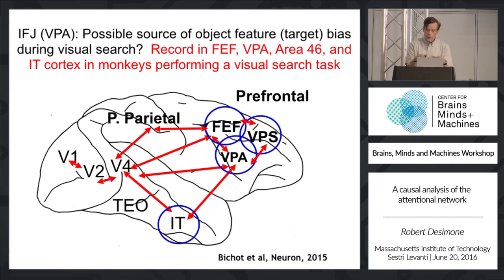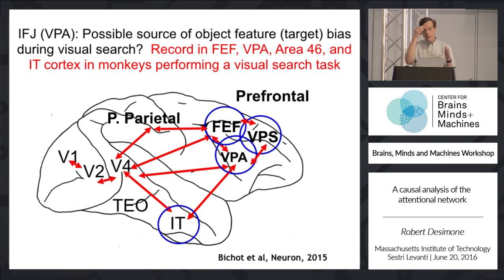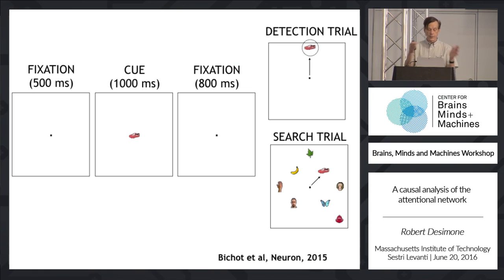Now I want to turn to work in the monkey, where we've used a different type of causal analysis by actively perturbing activity. In the human experiments it's difficult to actively perturb activity, but we're trying to use neurofeedback as a way of controlling activity in human cortex. In monkeys, we can use pharmacological methods combined with neural recordings to test these ideas of what causes what.